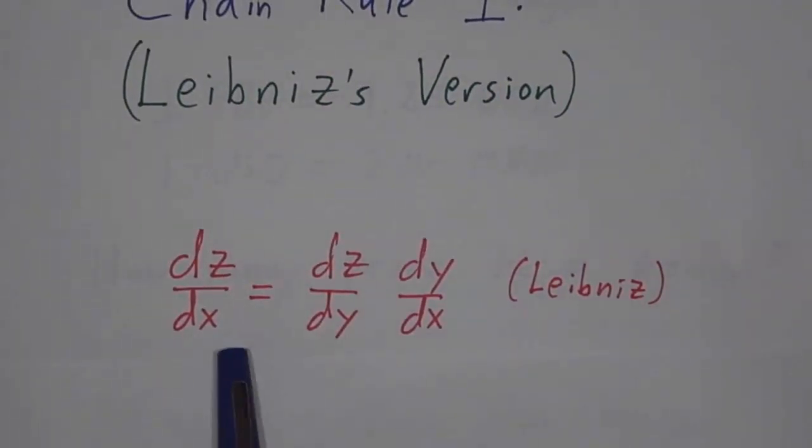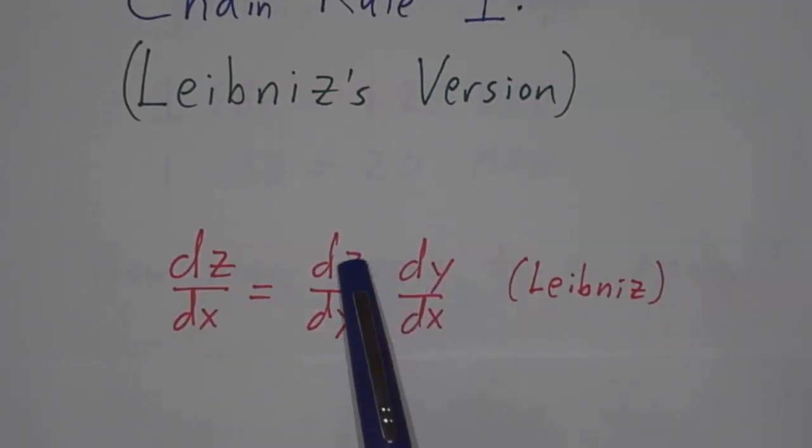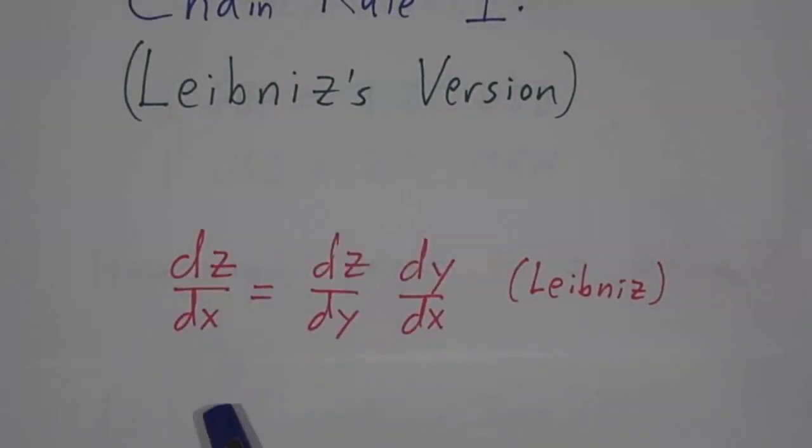It says if you've got three variables x, y, and z, and y depends on x, and z depends on y, and so indirectly depends on x, then the derivatives are related in this way.